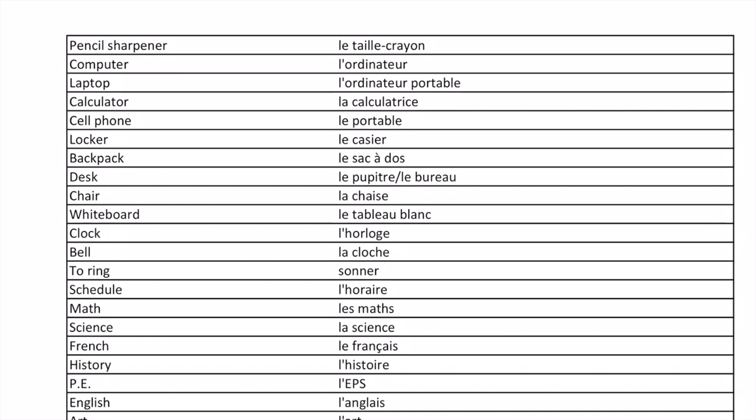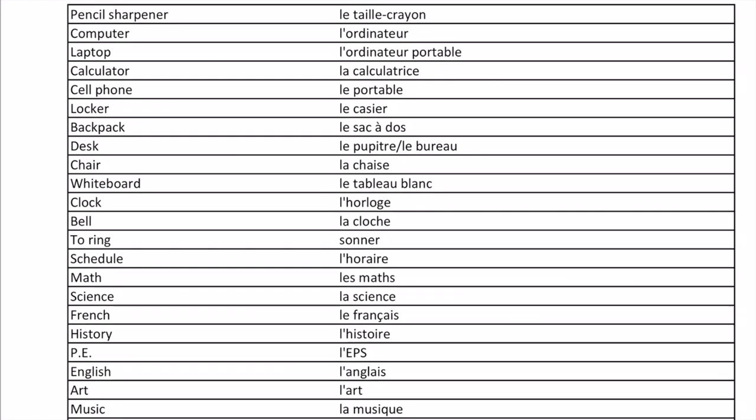Now the difference between these two: 'le pupitre' — that would be a student desk like the ones we have in class — and 'le bureau' — that would be a desk like a teacher's desk, one of those big ones with the drawers. 'La chaise.' 'Le tableau blanc.' 'L'horloge.' 'La cloche.' 'Sonner.' 'L'horaire.'